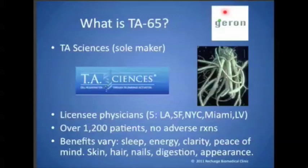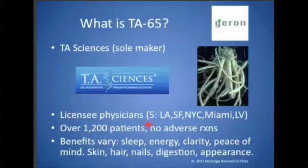TA-65 is a single molecule derived from a root extract of a Chinese herb called astragalus. It was discovered by a company named Geron and is marketed by TA Sciences, the sole maker and distributor of the proprietary molecule. The number of patients who have taken it is well over 1,200, without any adverse reactions, and there is lots of anecdotal evidence. The benefits will vary depending on what the person needs fixed.